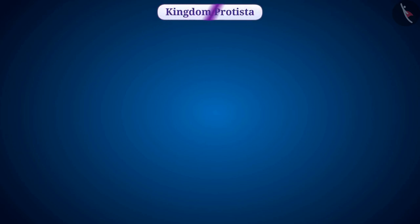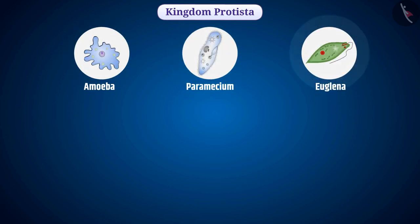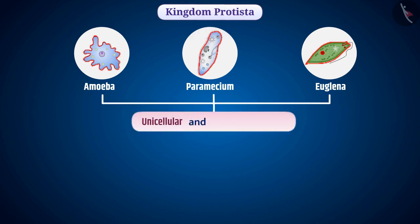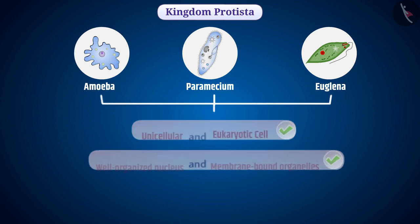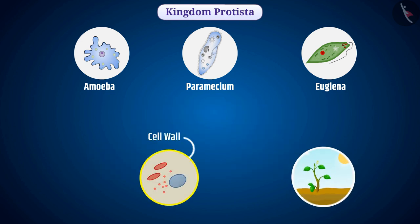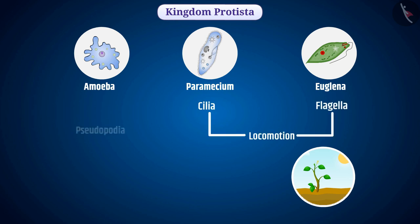Kingdom Protista mainly consists of aquatic organisms such as amoeba, paramecium, euglena, etc. Most organisms of this kingdom are unicellular but have a body made up of eukaryotic cells — the cell has a well-organized nucleus and other membrane-bound organelles. Some of these organisms have cell walls and some do not. Some have structures such as cilia and flagella for locomotion. With the help of pseudopodia, amoeba performs locomotion and takes food.